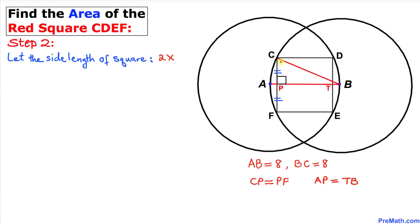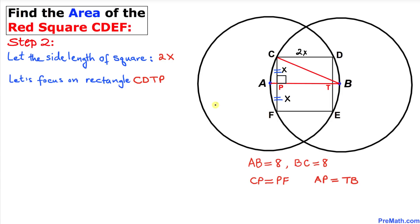Let's call the side length of this square 2x. So each side of the square is 2x. Since chord CF has been divided into two equal parts, I'm going to call CP = x and PF = x as well. Now let's focus on rectangle CDTP.